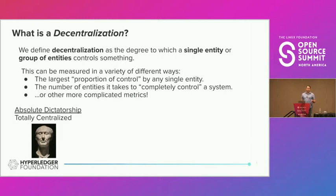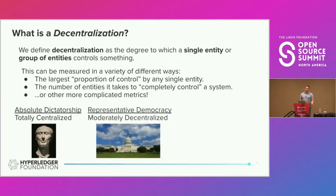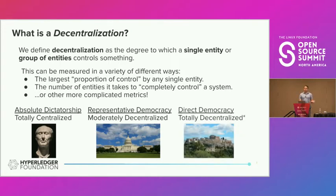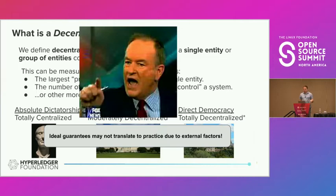As an abstraction, you can think of government. You could have an absolute dictatorship, which is totally centralized. You could have a representative democracy, which is sort of moderately decentralized. And then a direct democracy, which is totally decentralized. But there are always caveats — even if your protocol is decentralized in theory, ideal guarantees may not translate to practice due to external factors.